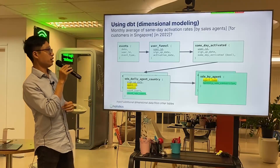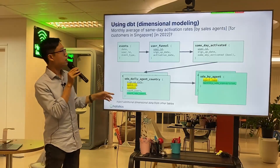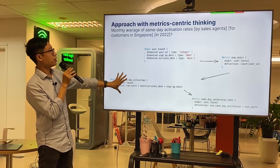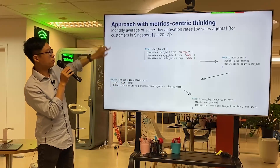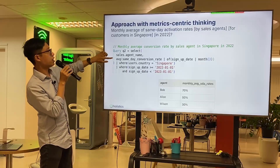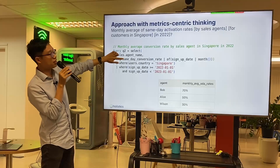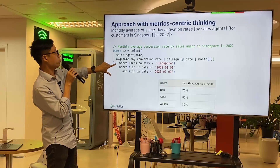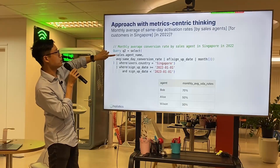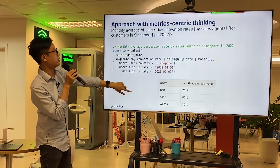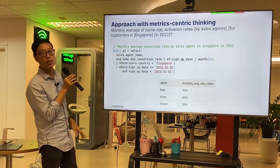Using dbt you need to identify the missing dimension, join the right tables, and find the right WHERE clauses. With metric-centric thinking, using all the metrics we defined before, the answer is just five lines of code: SELECT sales_agent, average of the conversion rate metric (which turns it monthly), GROUP BY sales agent, filter customers in Singapore, filter year 2022. No need to worry about joins.